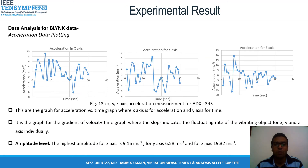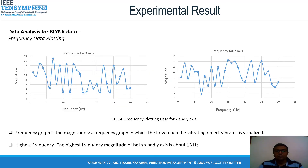Now the experimental result analysis for Blynk data. These are the acceleration versus time graphs, where the X-axis is for acceleration and the Y-axis is for time. The highest amplitude for X-axis is 9.16 m/s², for Y-axis 6.58 m/s², and for Z-axis 19.32 m/s². Figure 14 shows the frequency data plotting of X and Y axes. The highest frequency magnitude of X and Y axes is about 15 Hz. From the amplitude values, the condition of the engine is analyzed. The experimental engine used for data measuring has a highest frequency of 33.6 Hz, and the highest frequency tolerating value of the engine is 1 kHz. Therefore, the engine is totally in good condition because its vibrating frequency is less than its highest frequency tolerating value.